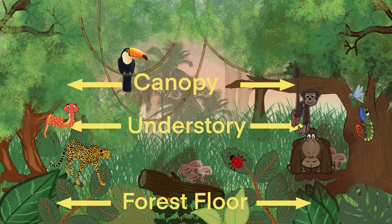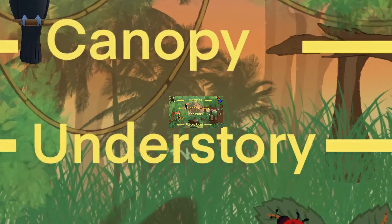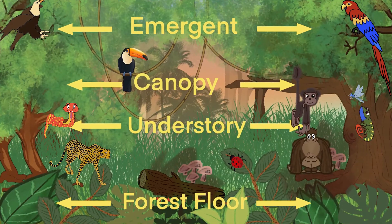The last layer above the canopy is the emergent layer. This layer receives bright sunlight and lots of rain. You will find mostly winged creatures on this level, such as scarlet macaws and eagles.